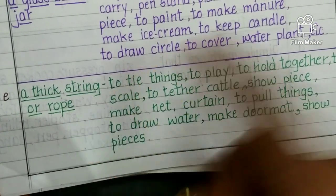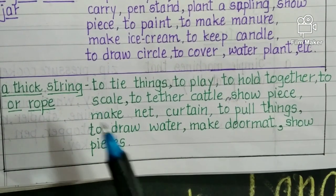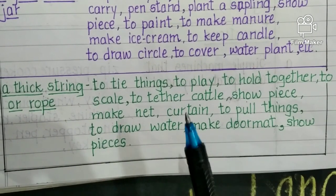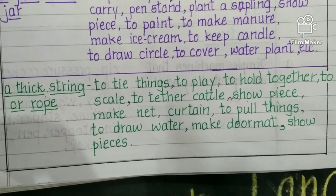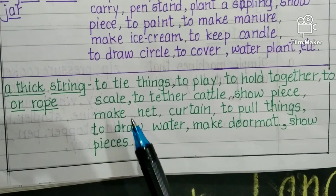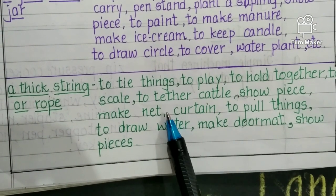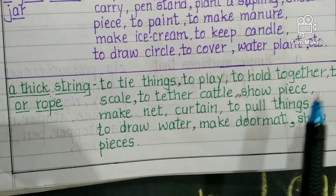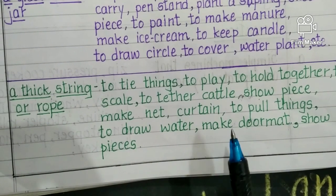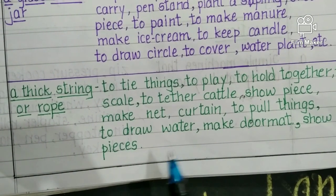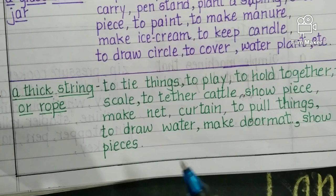A thick string or rope can be used: to tie things, to play, to hold things together, to climb (to scale), to tether cattle, as a showpiece, to make a net, as a curtain, to pull things, to draw water, to make a doormat (by winding it round and round), or as a decorative showpiece.